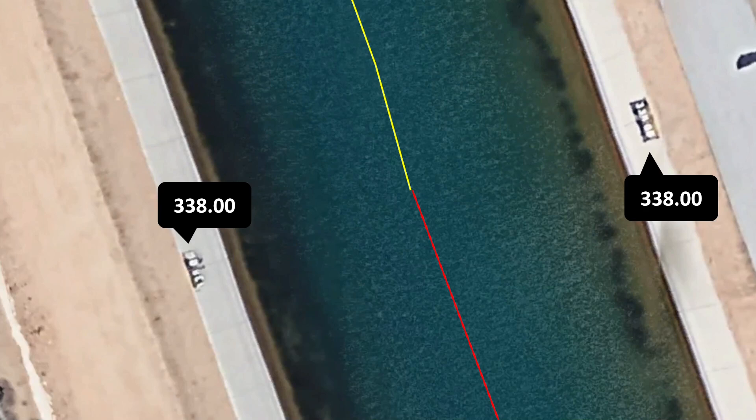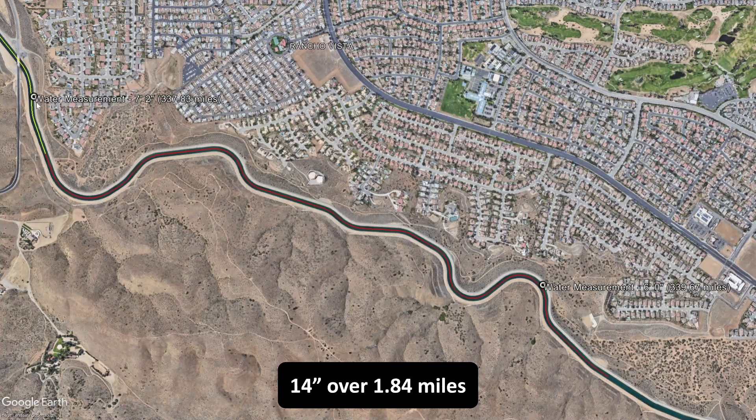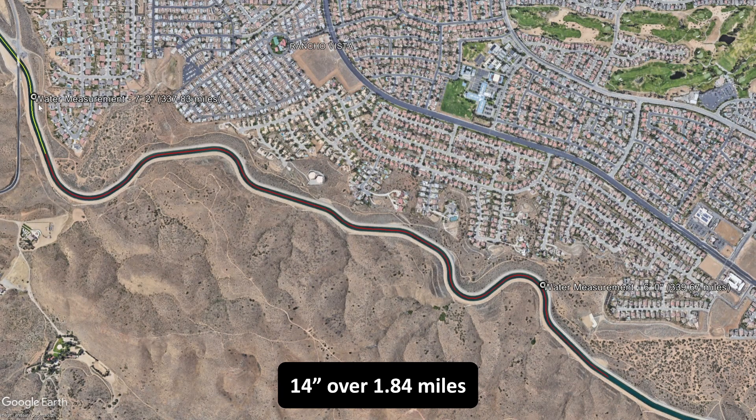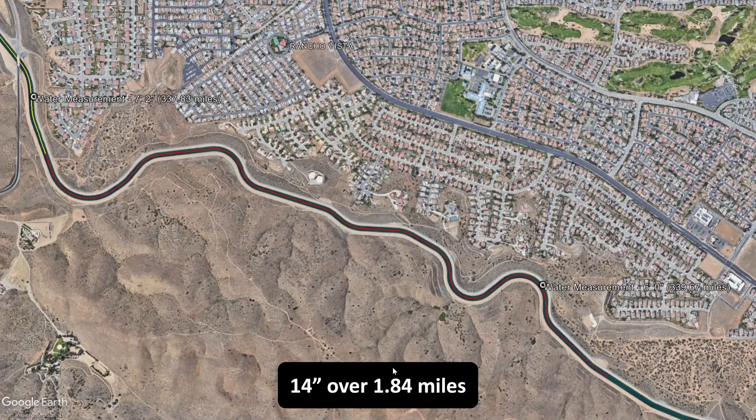Now the cool thing about the aqueduct, is not just that the survey benchmarks have an aqueduct distance associated with them, like the 338.1 benchmark that JT saw. But there's also a big ass number painted on the side of the wall, every mile. So with those, you can quite easily and quite accurately determine where Jay Toland stuck his tape measure in the water. And of course, that's what I did. So upstream, he measured seven feet, two inches down to the water at 337.83 miles. And downstream, he measured six feet, zero inches at 339.67 miles. So that's a 14 inch change over 1.84 miles.